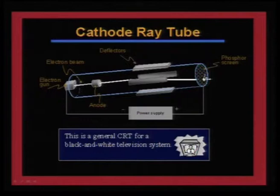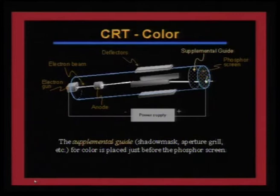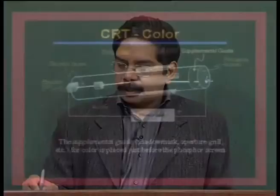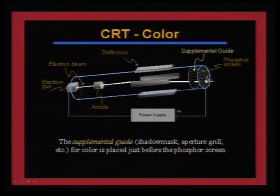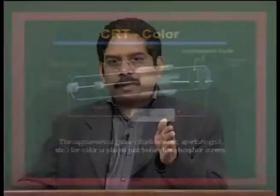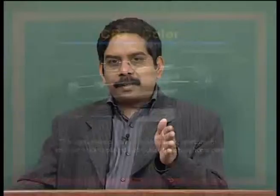The cathode ray can hit the screen millions of times per second as per the contoured deflection. We can also place a supplemental guide in front of the phosphor screen — this guide has many holes through which the electron beam selectively hits specific phosphor materials. This supplemental guide is called a shadow mask, and having a shadow mask in front of the phosphor screen means you are talking about a colour monitor system.